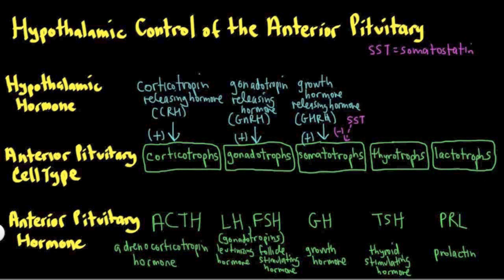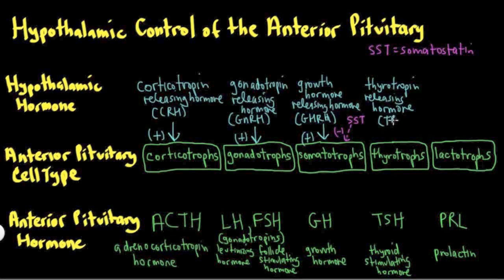For thyrotrophs, thyrotropin-releasing hormone (TRH) is the major controller, since another name for TSH is thyrotropin. TRH is abbreviated TRH and is a positive releasing hormone. It's also worth noting that somatostatin can have a mild inhibitory effect on thyrotrophs as well, but it's not dominant. So the dominant control of these four cell types is via releasing hormones, with only a mild inhibitory effect from somatostatin.